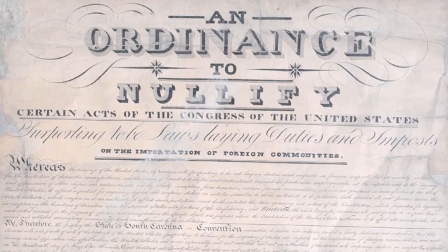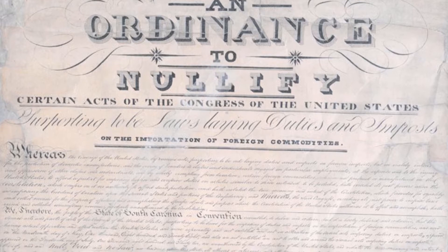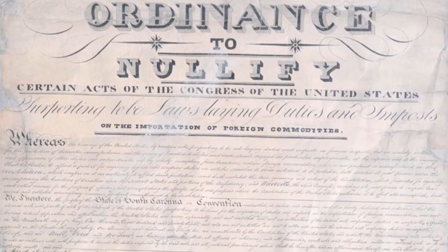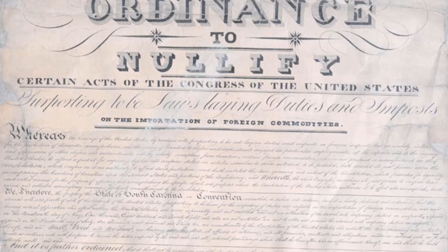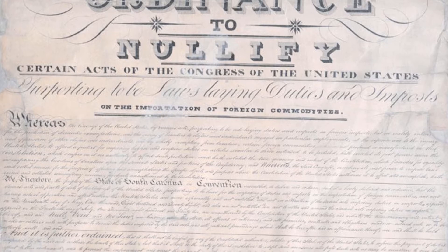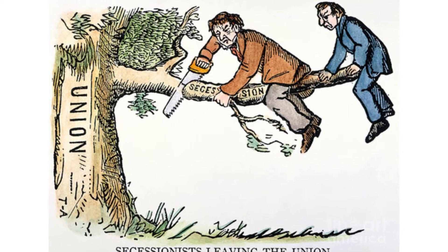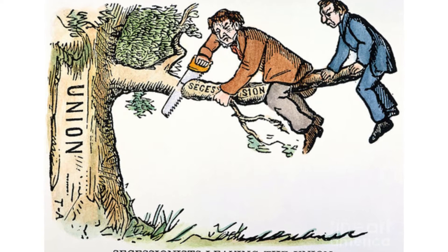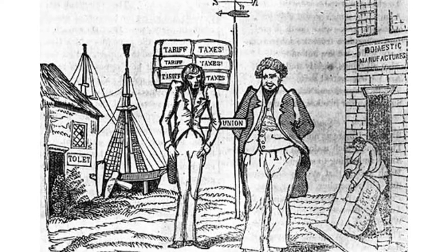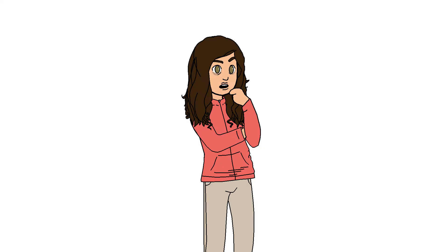This sparked the development of nullification theory, which suggested that the union was formed of sovereign states who had the right to dismiss rulings they deemed unconstitutional, and, vitally, the right to withdraw from the union if they so chose. While civil war was averted in this case through the passage of a compromise bill, such ideas would lay the groundwork for the south seceding from the union during the civil war.